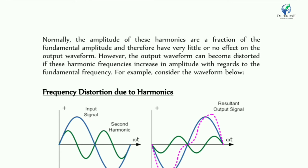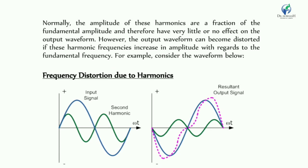The amplitude of the harmonics are a fraction of the fundamental amplitude, and therefore have very little or no effect on the output waveform. However, the output waveform can become distorted if the harmonic frequency increases in amplitude with regard to the fundamental frequency.